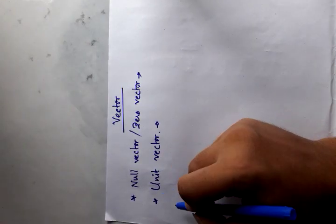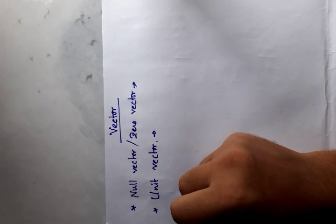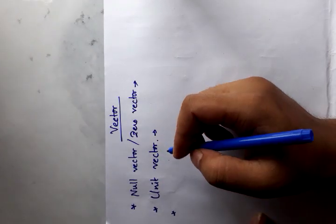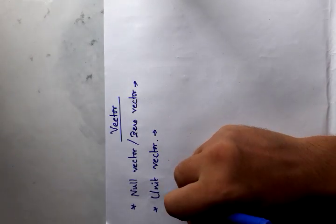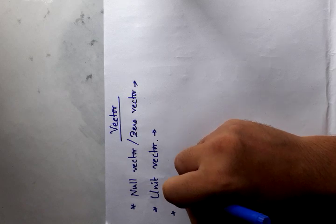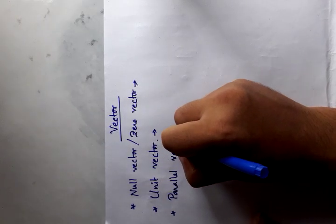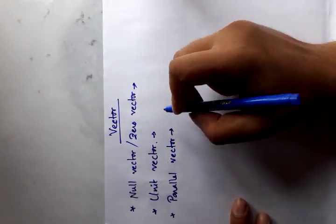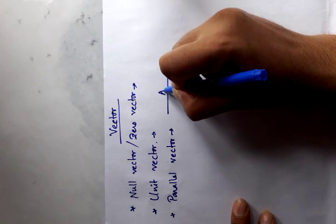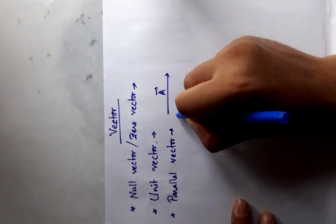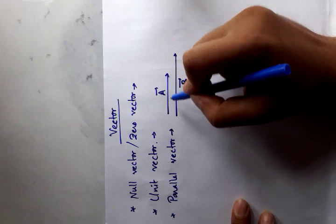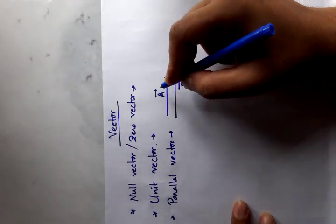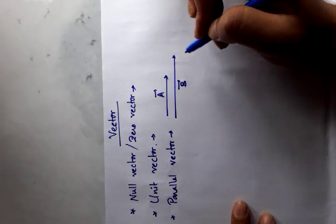After that, in the case of two vectors, suppose A and B two vectors are given. This will be the case of parallel vector. A vector is given by this and B vector is given by this. As we see that A and B both are parallel, so in this case we can say that A and B are parallel vectors.